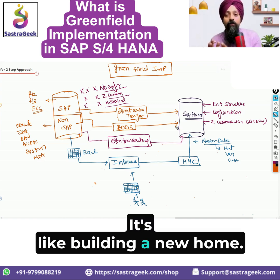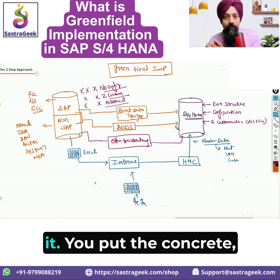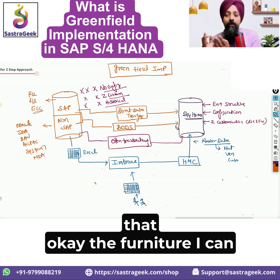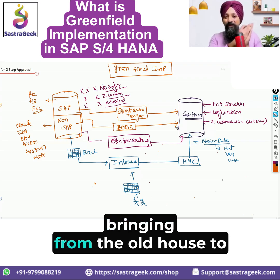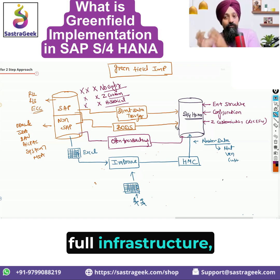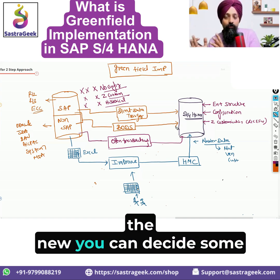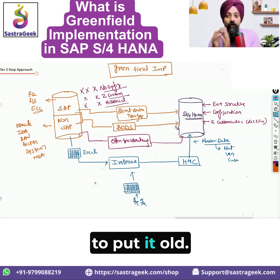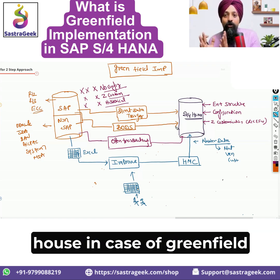It's like building a new home. When you build a new home, you need to dig it, put the concrete, make the base, and put the walls. But sometimes the furniture — you can bring it from your old house, and the people you would be bringing from the old house to the new house. But the full infrastructure — everything would be new. You can decide some furniture you want new, some furniture you want old. So we are building a complete new house in case of greenfield implementation.